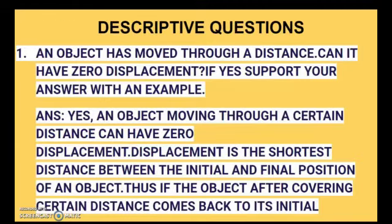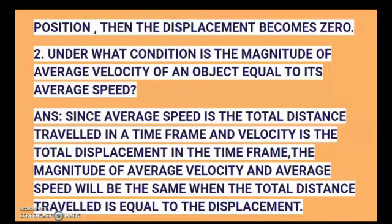Now let us discuss some descriptive questions. First question: an object has moved through a distance. Can it have zero displacement? If yes, support your answer with an example. Answer: yes, an object moving through a certain distance can have zero displacement. Displacement is the shortest distance between the initial and final position of an object.